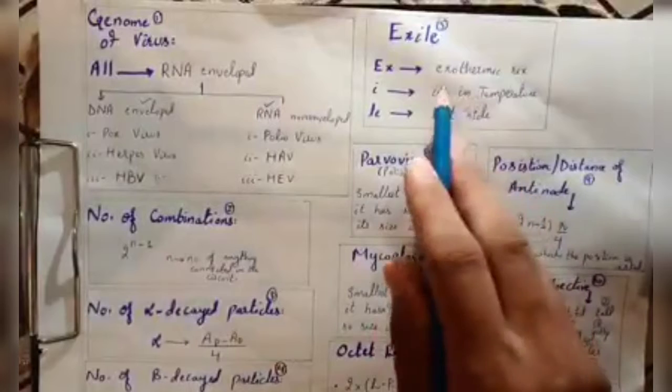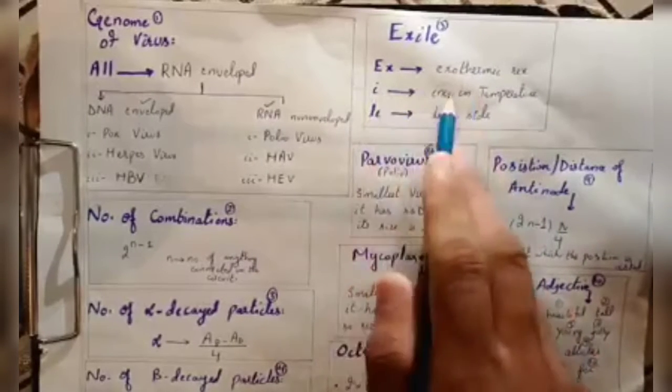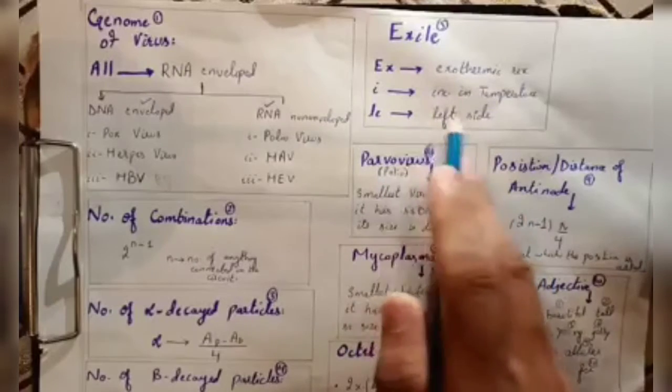The Le Chatelier principle, this is a good shortcut. If we explain this shortcut: Exile means exothermic reaction, I increase in temperature, L E means left side reaction. You can easily solve your reactions.